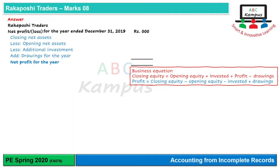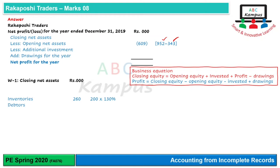Opening net assets: total assets were 952,000 and liabilities 343,000, so opening net assets (opening capital) = 609,000. For closing net assets: inventories after 30% increase = 260,000; debtors closing balance from T-account = 255,000; cash at bank = 90,000 + 40,000 (uncredited check) = 130,000.